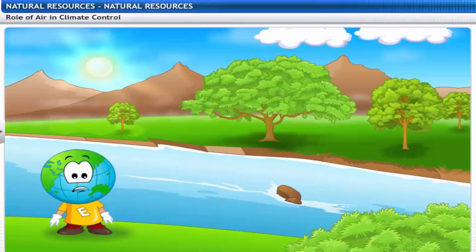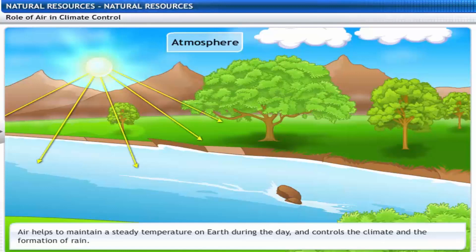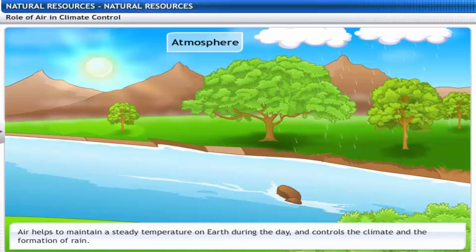I couldn't live without oxygen or carbon dioxide. I'm sure there is more that air does for us. That's right! Air helps to maintain a steady temperature on Earth during the day and controls the climate and the formation of rain. Let's see how.